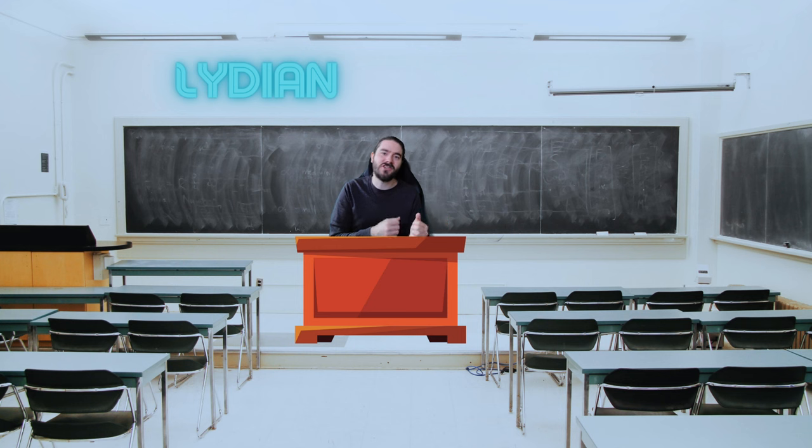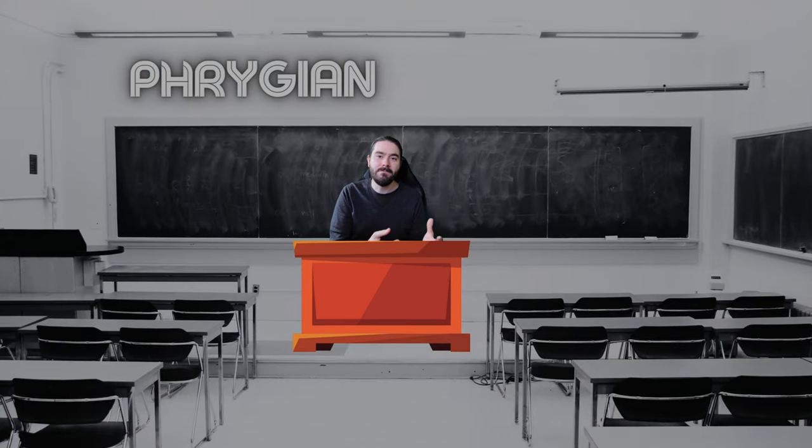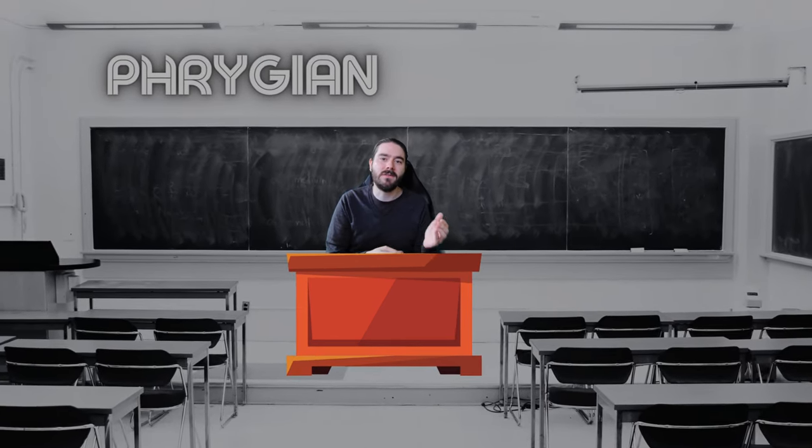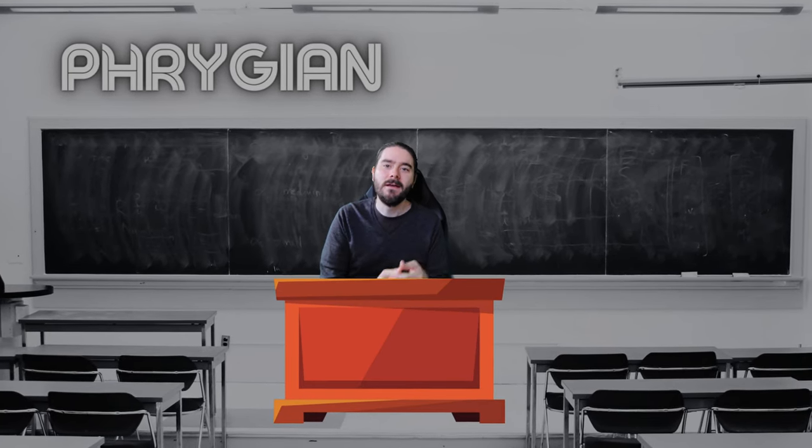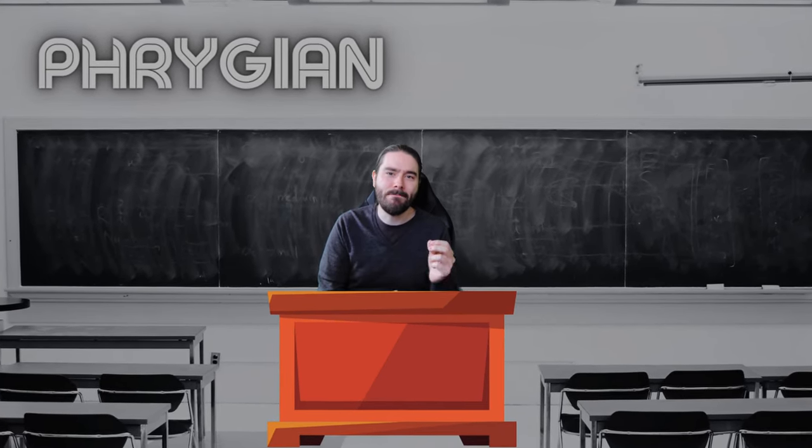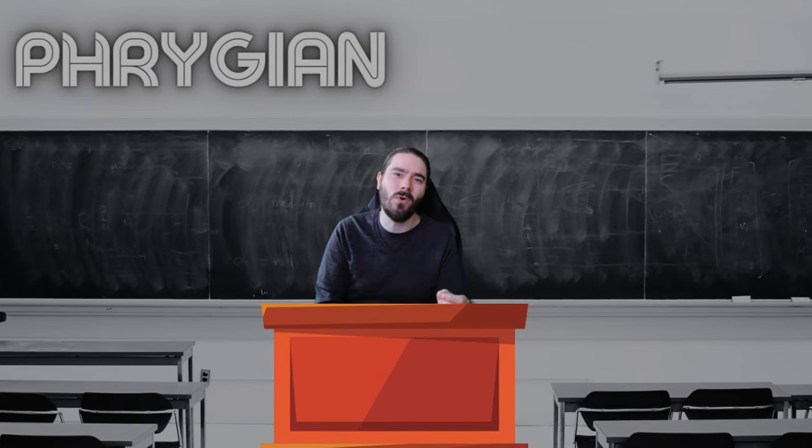A quick dash across campus now to the Phrygian department. The Phrygian mode, also known as the third mode of the major scale, has a distinctive intense and dark minor sound. Because of this, Phrygian is often used in metal music to provide an evil or exotic edge.